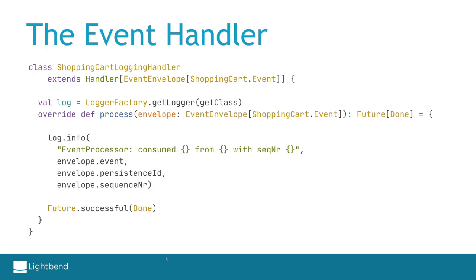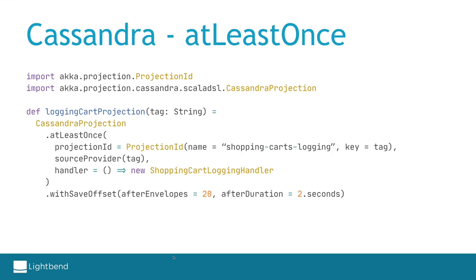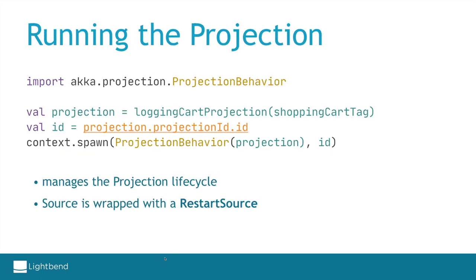For simplicity we will only log the event, but in a real application we would most likely update a model in the database. We define a projection based on the Cassandra implementation, choosing the at-least-once delivery strategy. The projection is identified by a projection ID defined by a name 'shopping-cart-logging' and a unique key — we can use the tag as the unique key. We pass it the source provider and our user handler. With at-least-once strategy you can define the frequency at which offsets are persisted — here we chose every 20 events or after two seconds. To run a projection we pass it to the ProjectionBehavior, which starts the processing and restarts the stream if the projection fails.